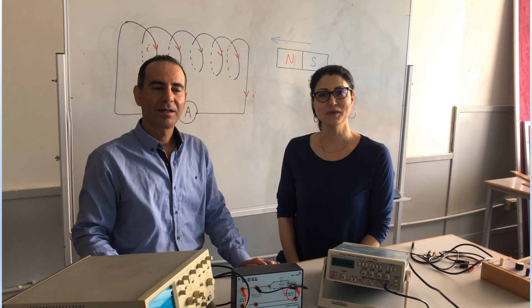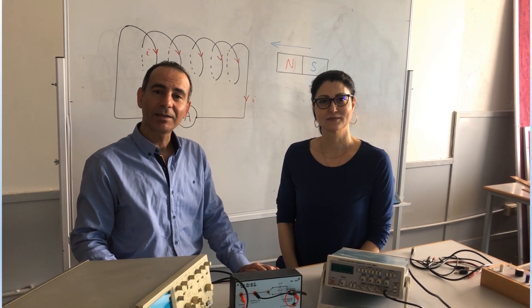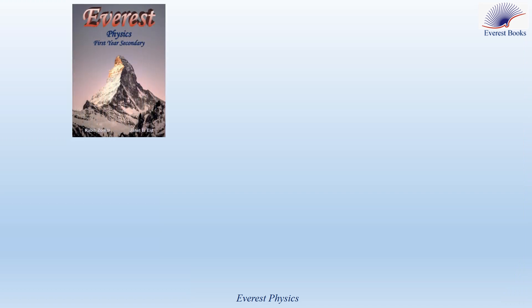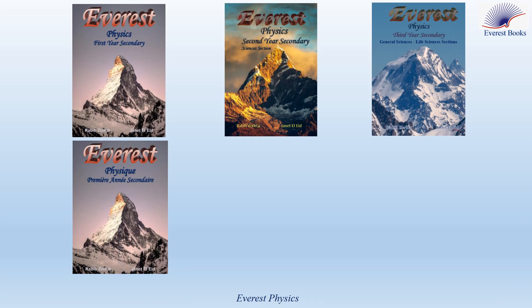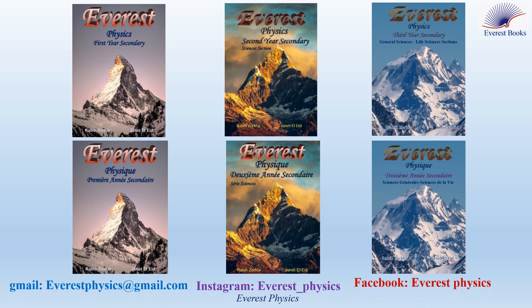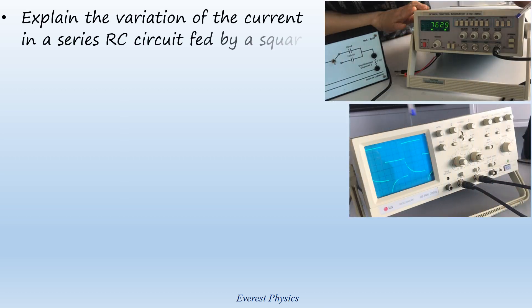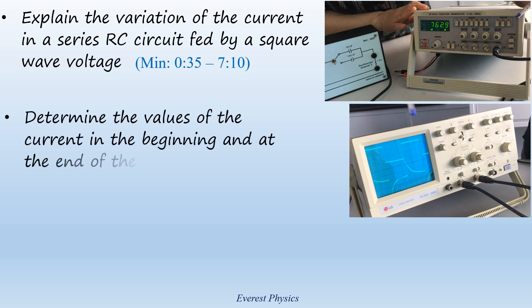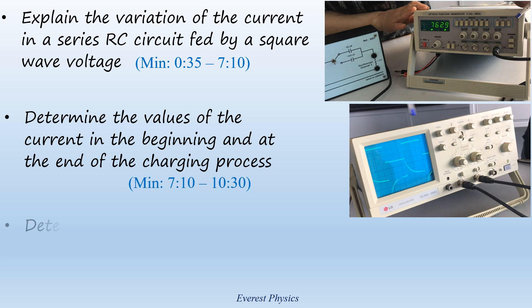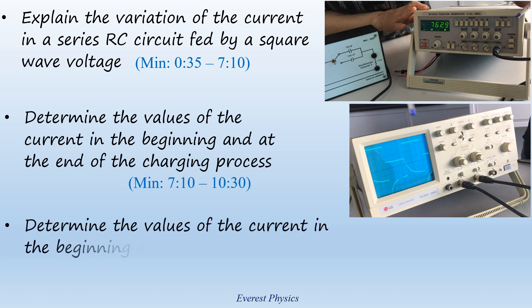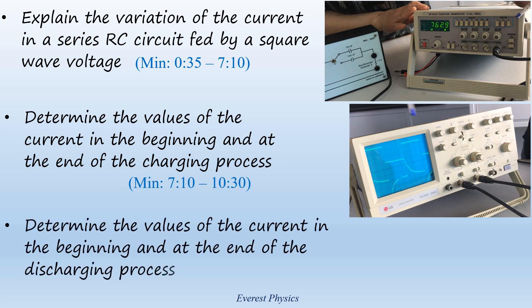Hello, this is Janet Andron. Welcome to Average Physics Academy. Before we start, we'd like to recommend our Average Physics books for high school, where you can find more explanations and solved applications. In this video, we are going to explain the variation of the current in a series RC circuit fed by a square wave voltage, determine the values of the current at the beginning and end of the charging process, and determine the values of the current at the beginning and end of the discharging process.